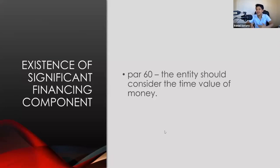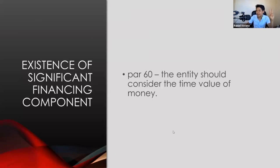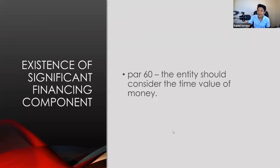The concept of time value of money is that the value of money a few years ago is not the same as today, and not the same as a few years from now. For example, when we were young, one peso could buy two or three candies. Now, one peso can only buy one candy. A few years from now, you may need two pesos to buy one candy. The value of the same one-peso coin changes over time.